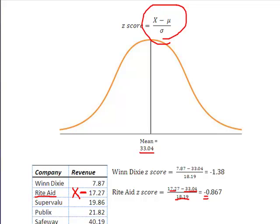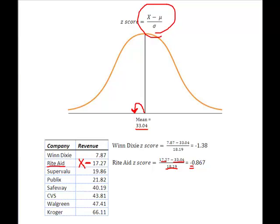So if I want to find the Rite Aid revenue number, I'm going to step down the curve to the left .867 standard deviations from the mean. And if I go negative .867 standard deviations from the mean, I'm going to locate right there the revenue of Rite Aid.